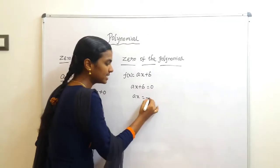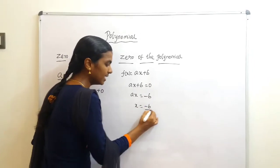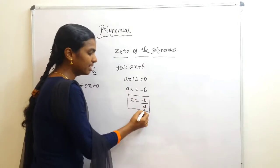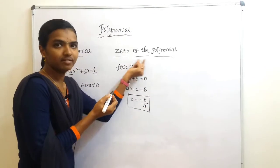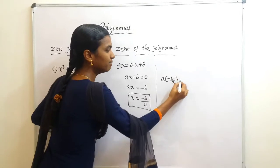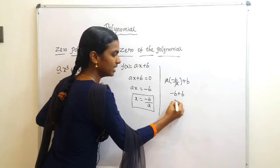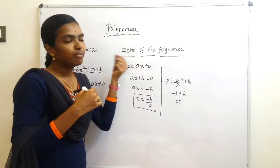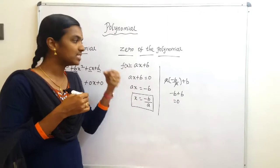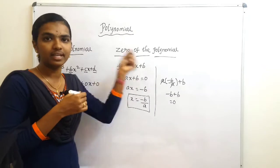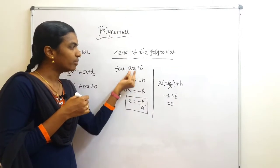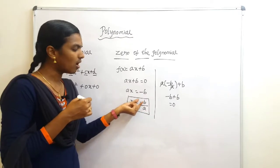To find the zero, set ax + b = 0. Then ax = −b, so x = −b/a. Now substitute back to verify: a × (−b/a) + b = −b + b = 0. So the polynomial equals zero. Therefore, −b/a is the zero of the polynomial ax + b. This zero is also called a root or solution of the polynomial.